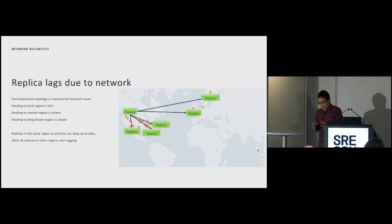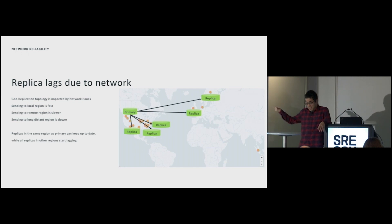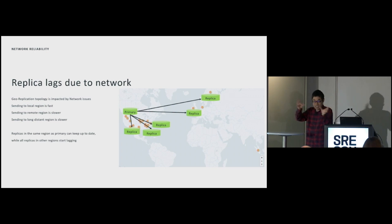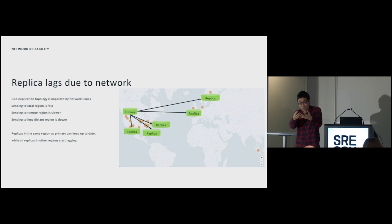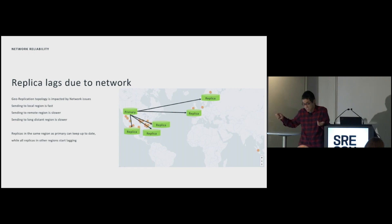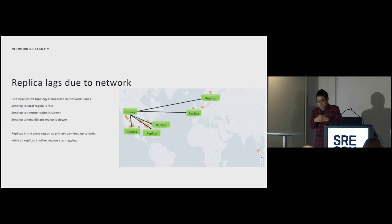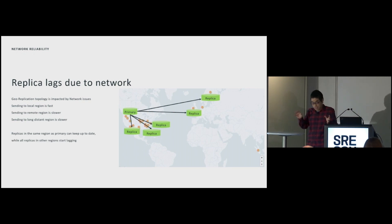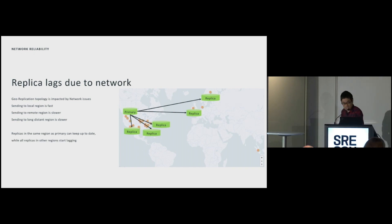There are several other topics like replica lag due to network. We have instances in the US and Europe, and the network between them is slower than local networks. If you write too much and local instances keep up, you need to make sure far-distant replicas also keep up. You may need to throttle some writes to ensure all replicas stay caught up — a challenge when operating with long-distance networks.